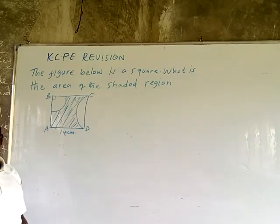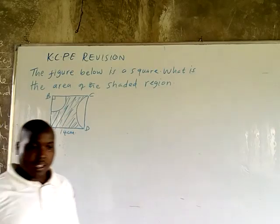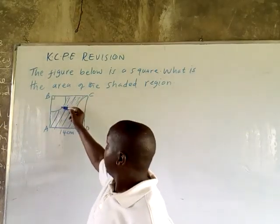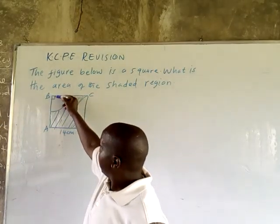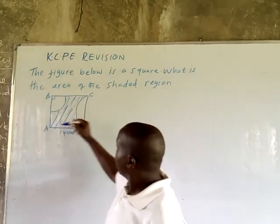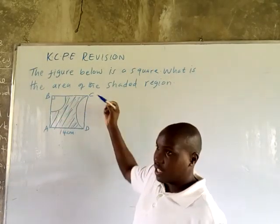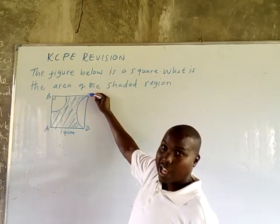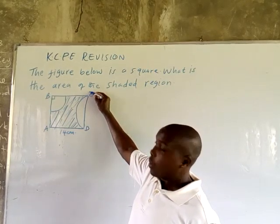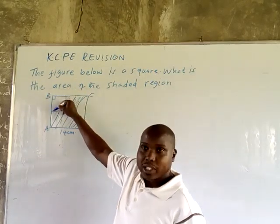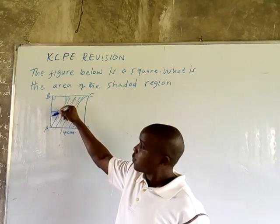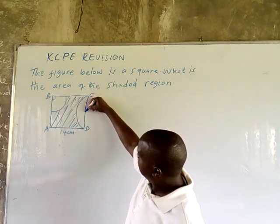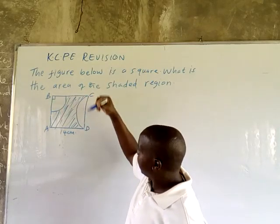This is a square, and this region you can see is shaded. We have a region here which is unshaded, and this region also is unshaded. This one is a quarter of a circle because you're looking at 90 degrees here. This is a straight line, so the angle is 180.